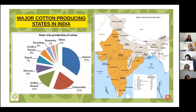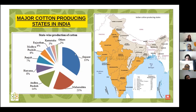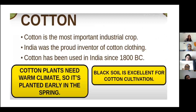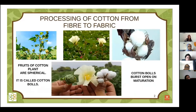The major cotton-producing states in India are Gujarat, Maharashtra, Andhra Pradesh, Haryana, Punjab, Madhya Pradesh, Rajasthan, and Karnataka. Now we'll go ahead to see how to make fabric from cotton fibers.